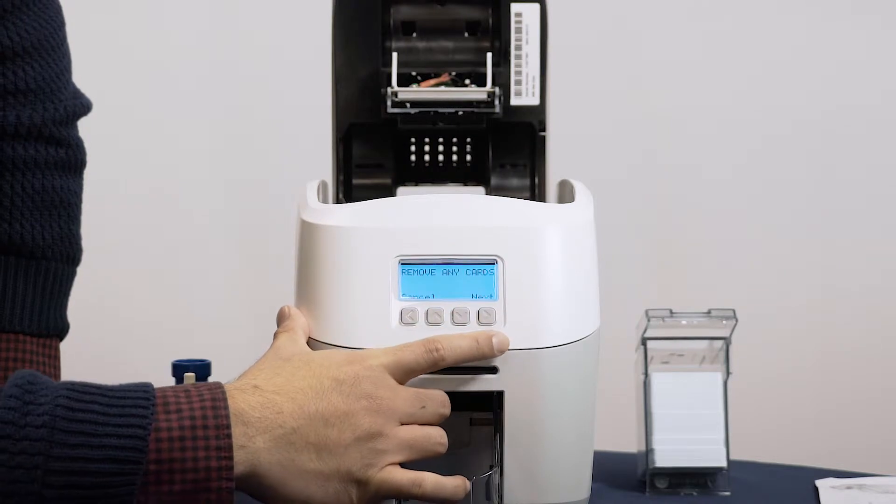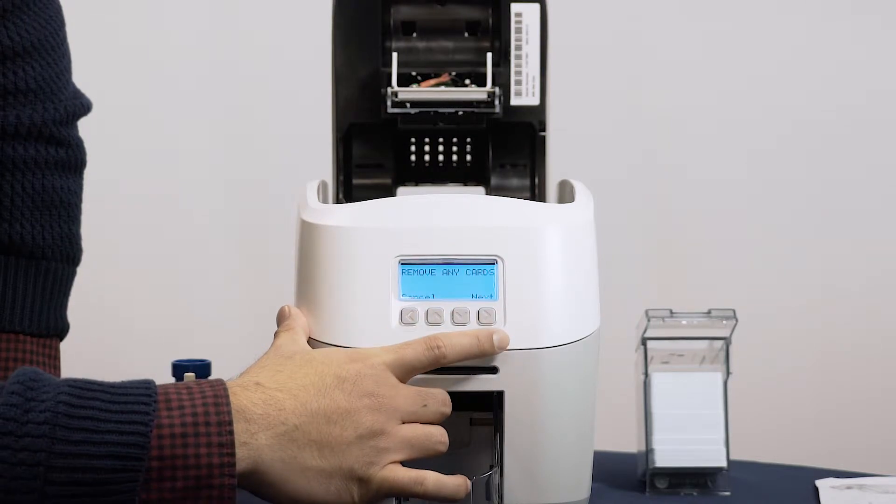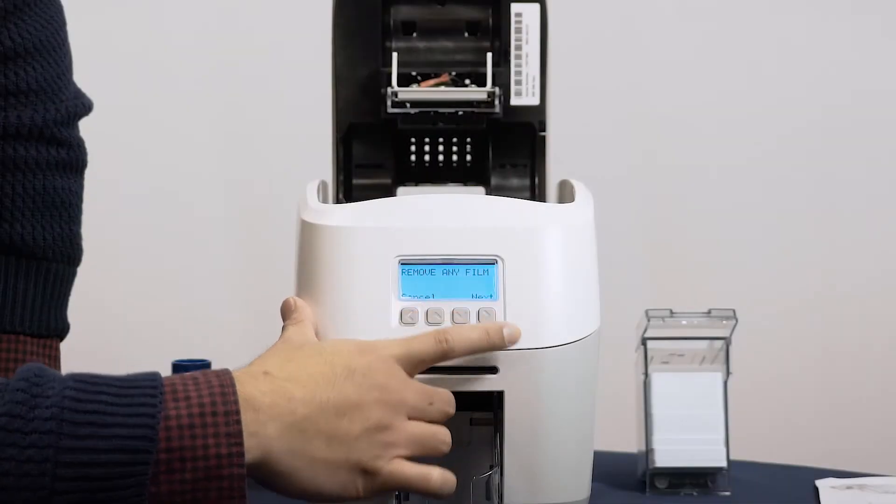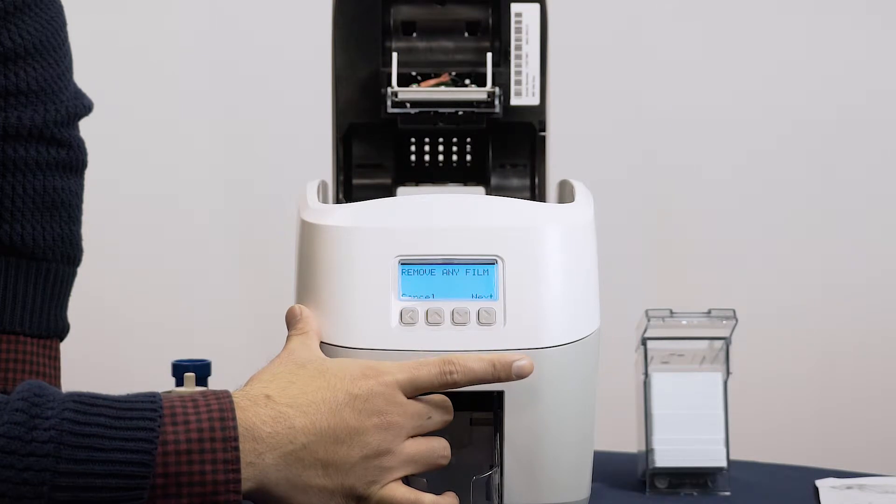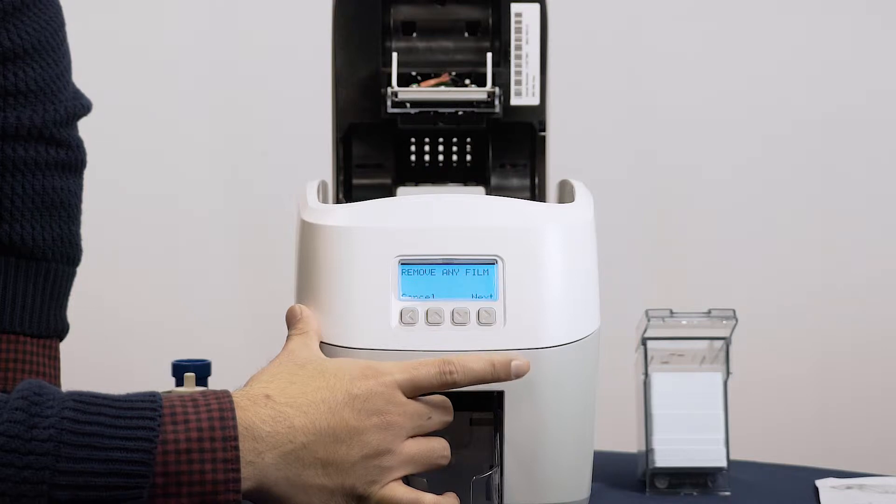The display will show a warning prompting you to remove any cards from the printer if you haven't already done so. Click Next. The display will now prompt you to remove the dye film. Do this if you haven't already done so. Press Next.